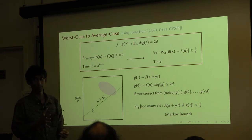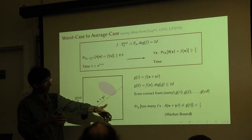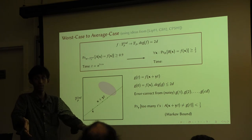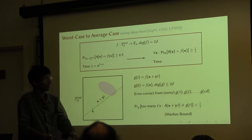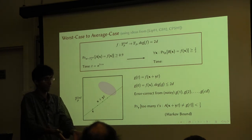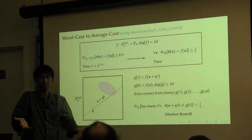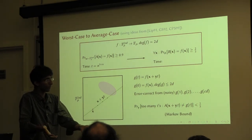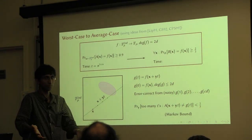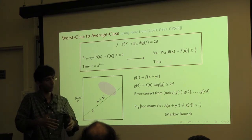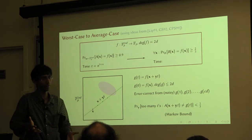But this sort of approach is not going to get you much better than half. The reason is the error-correcting step: you're saying I have this noisy codeword and I'm going to decode it. If your fraction of errors is more than half, you have no hope of doing this — there are too many codewords that are close enough, and there's no way of decoding it.